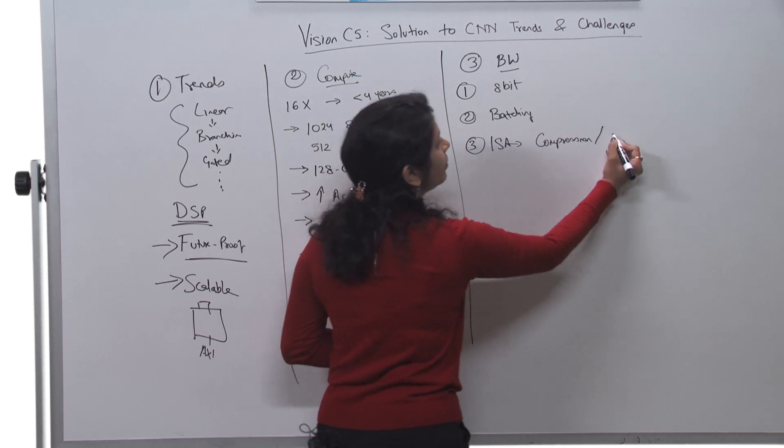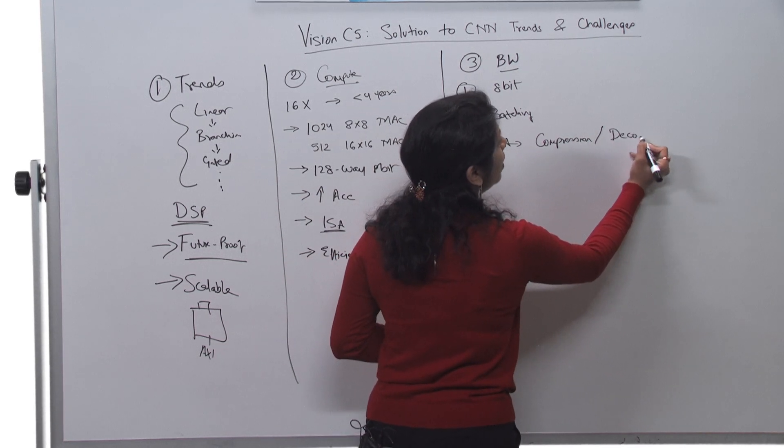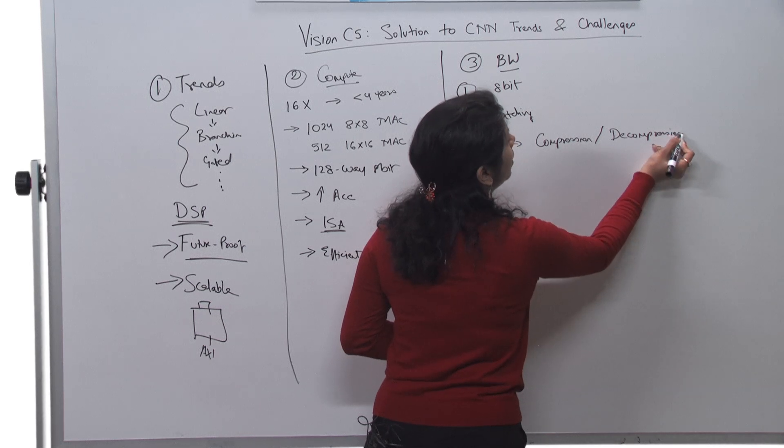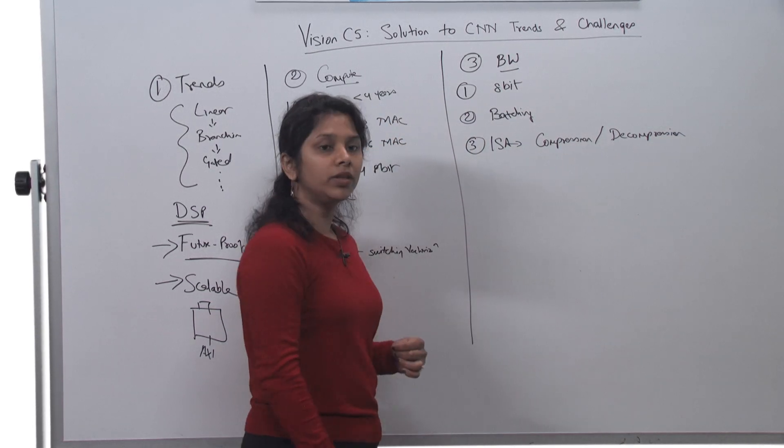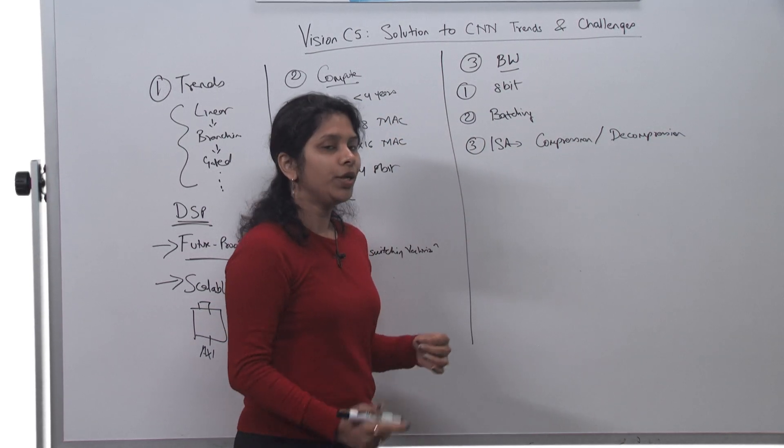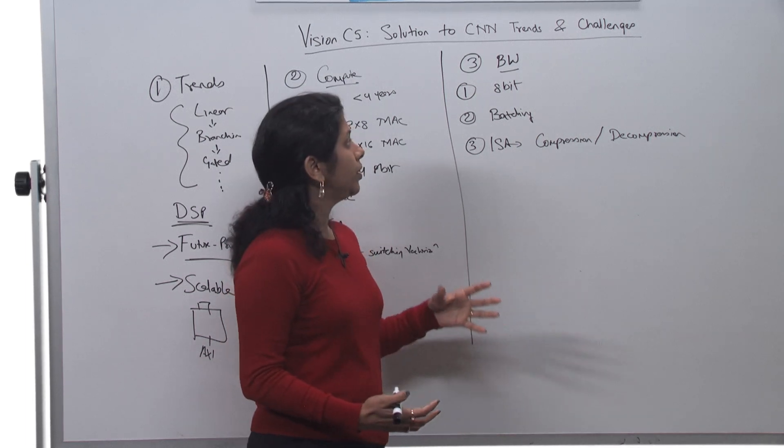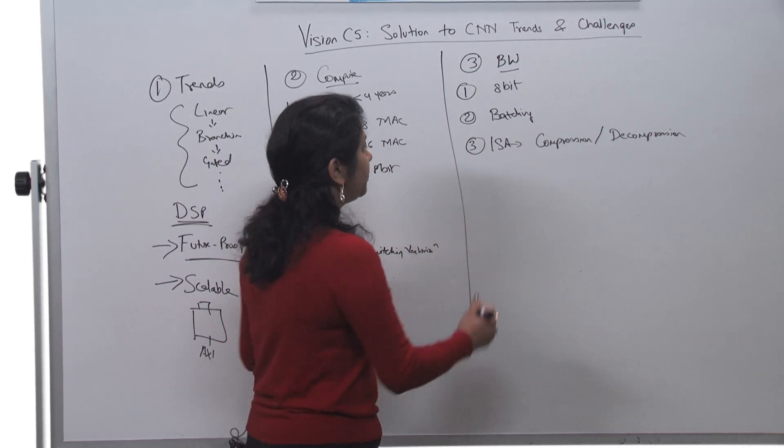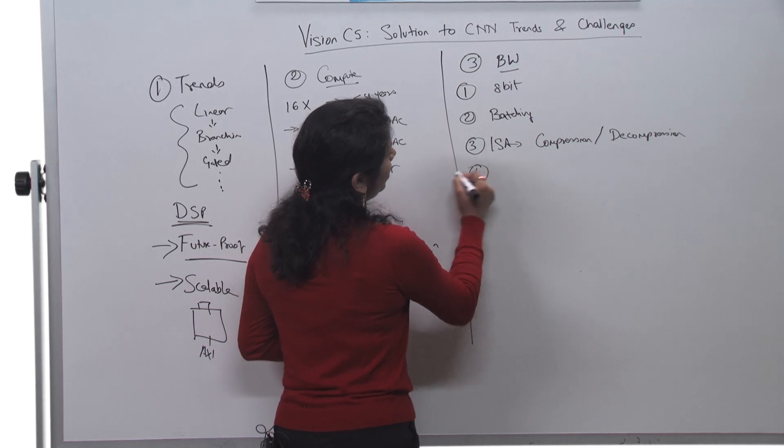Then we have added special ISA support for compression and decompression for data and for coefficients. So if we have enough sparsity in our data and coefficient, we are able to utilize these on-the-fly decompression support to get the max out of our bandwidth.